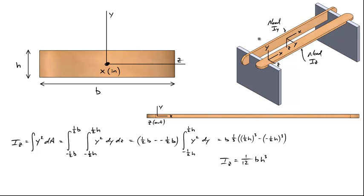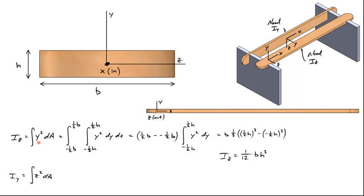If we wanted to consider the vertical popsicle stick, all the math is exactly the same, except now we're bending about the y-axis. Instead of evaluating the integral y squared dA, we'll evaluate the integral z squared dA, which comes out to be one-twelfth h b cubed instead of one-twelfth b h cubed. And note, because b is larger than h, we'll see a much higher moment of inertia for I_y than for I_z. A higher moment of inertia means that the vertical popsicle stick will bend less than the horizontal popsicle stick.